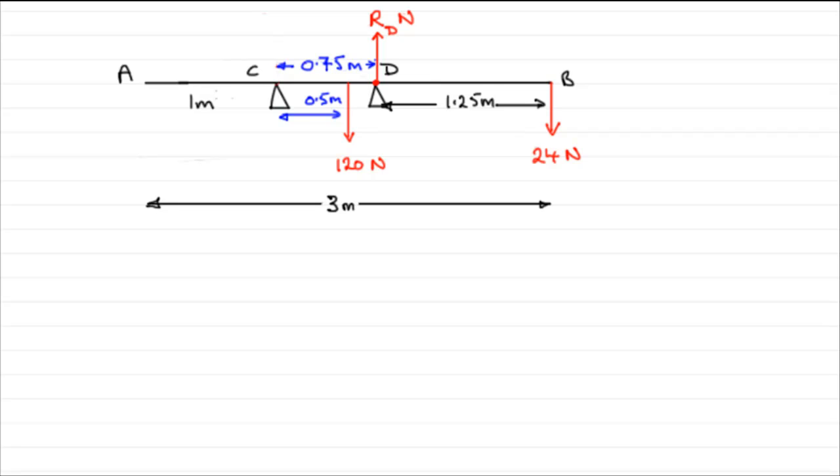Now, in this part, I've replaced the weight W with the 24 Newtons that we found from the last part, and we now need to find the reaction at support D, which I've labeled R_D.